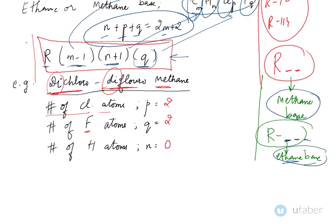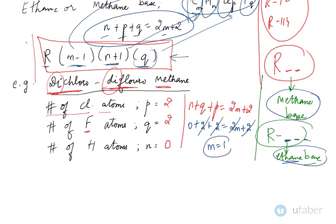Now let us check what is the value of M. N, P, Q, and M follow this rule: N plus P plus Q equals 2M plus 2. Let us substitute the values. N is 0, Q is 2, P is 2. 2 and 2 get cancelled, 2 and 2 become 1, so M, the number of carbon atoms, is also 1.